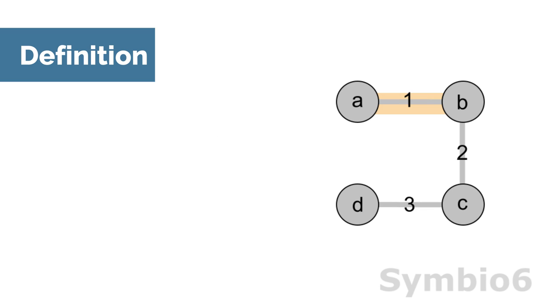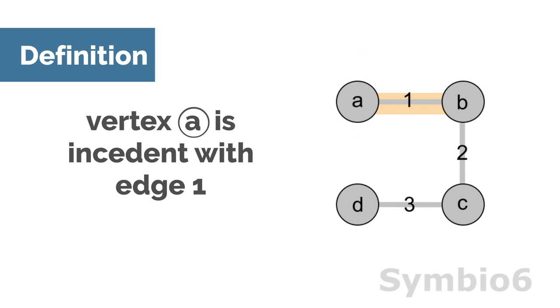Not only edges, but vertices can also be incident with an edge. A vertex is incident with an edge if the vertex is one of the endpoints of that edge.